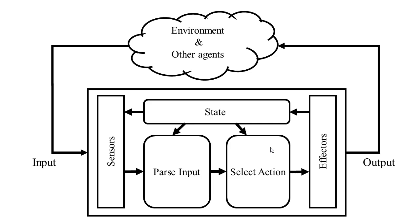IA consists of sensors for input, a process for parsing input, another process for action selection, an effector to realize the selected action, and a state to describe its current status.